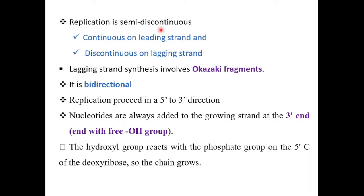This replication process is semi-discontinuous. On the leading strand it is continuous; on the lagging strand it is discontinuous, forming what we call Okazaki fragments. The direction of replication is bidirectional, and the synthesis process goes from 5' to 3'. The reason is that at the 3' position of the sugar (pentose), there is a free OH group, and the new phosphate attaches at that free OH group, causing nucleotide elongation.